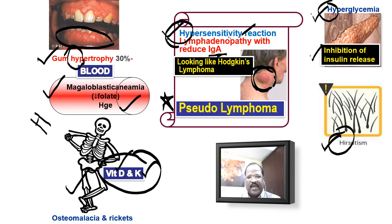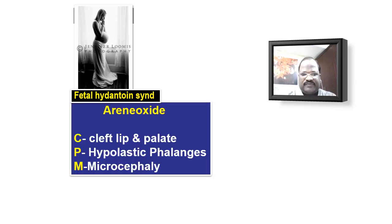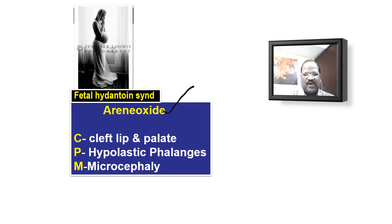One more interesting point: any anti-epileptic given to treat epilepsy in pregnancy may cause fetal damage — teratogenicity. Phenytoin is also a teratogen, causing what is called fetal hydantoin syndrome. Phenytoin produces one metabolite called arene oxide, and this metabolite may cause fetal damage. The clinical manifestations of fetal hydantoin syndrome can be remembered using the mnemonic CPM: C for cleft lip and cleft palate, P for hypoplastic phalanges (the fingers become flabby), and M for microcephaly. These are the important clinical manifestations of fetal hydantoin syndrome.